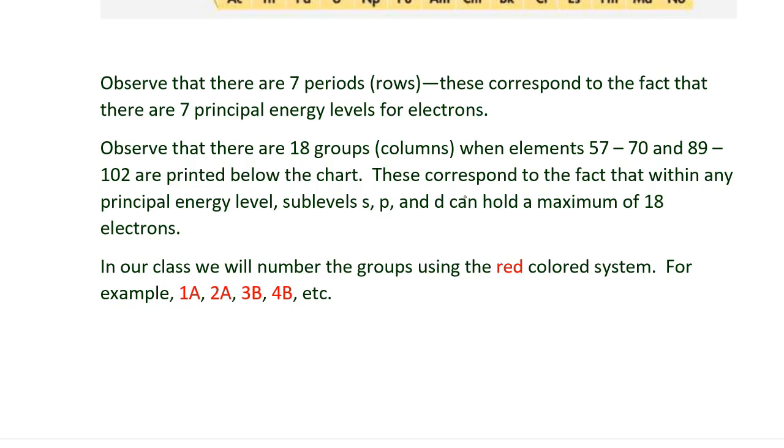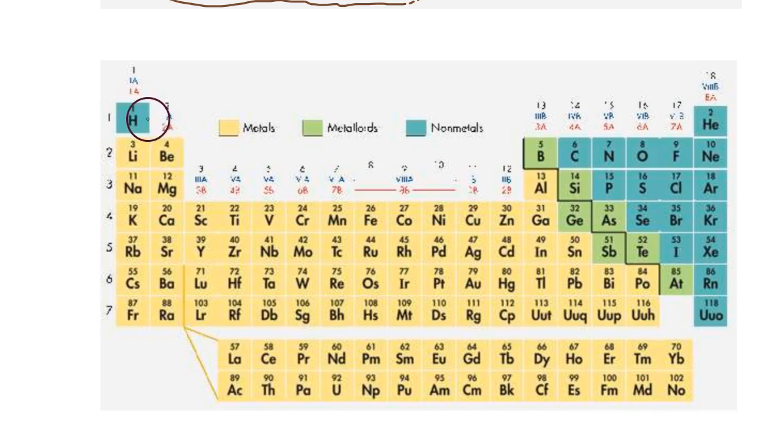For example, 1A, 2A, 3B, 4B, and so on. For example, if I ask you where is hydrogen located in the periodic table, you could say it's in period 1 and in group 1A. Or if I ask you where is silicon located in the periodic table, you can say that it is in period 3 and in group 4A.